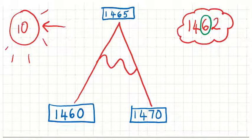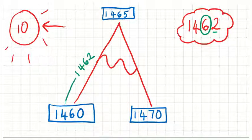Now we're going to place our number onto the mountain. It's not as big as 1465. It's only 1462. So it'll go on this side of my mountain. So when it slides down, it will round itself to 1460.